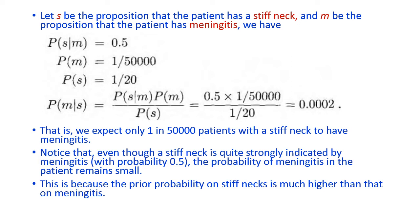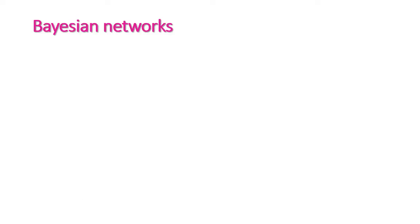So we expect only 1 in 50,000 patients with a stiff neck to have meningitis. Notice that even though stiff neck is quite strongly indicated by meningitis with a probability of 50%, the probability of meningitis given stiff neck remains small, because the prior probability of stiff neck is much higher than that of meningitis. Next we will move to Bayesian networks.